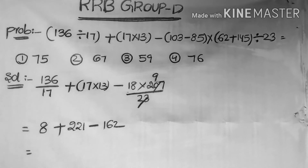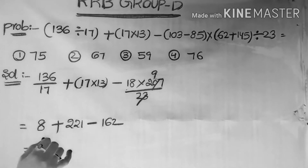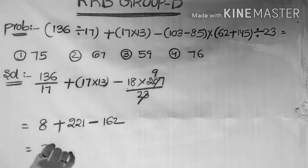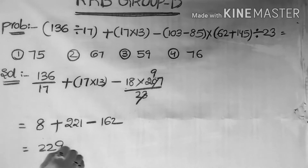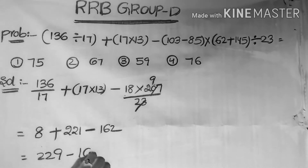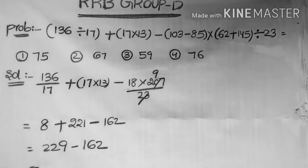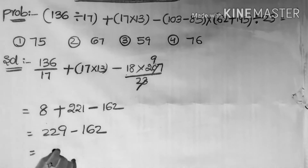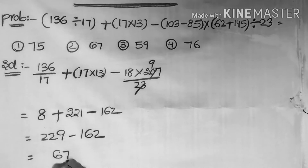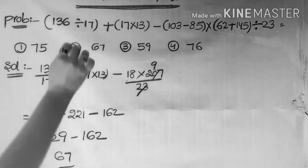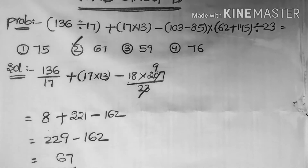Now this is 221 plus 8, which is 229, minus 162, which is nothing but 67. That is, the answer is the second option.